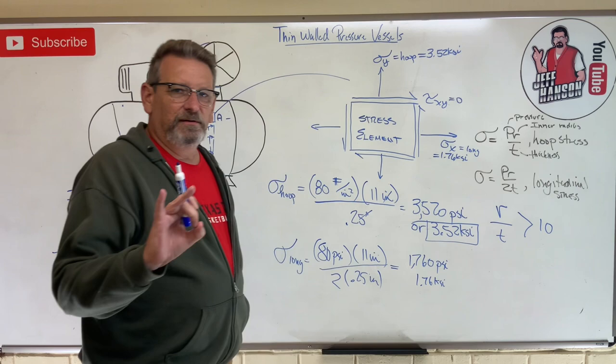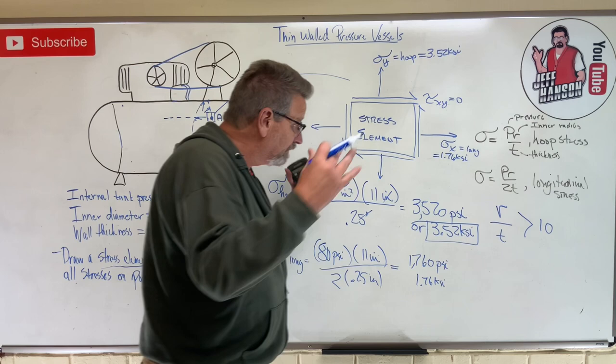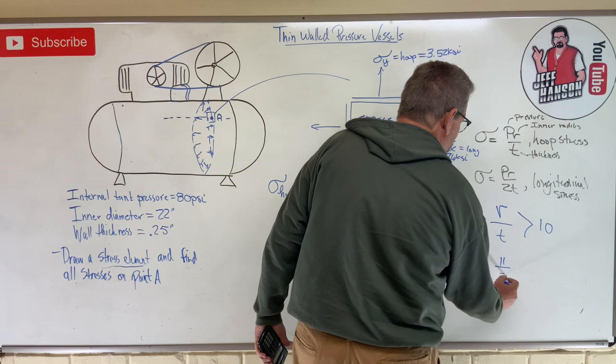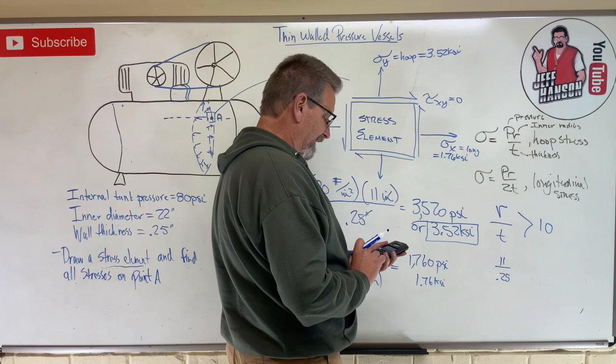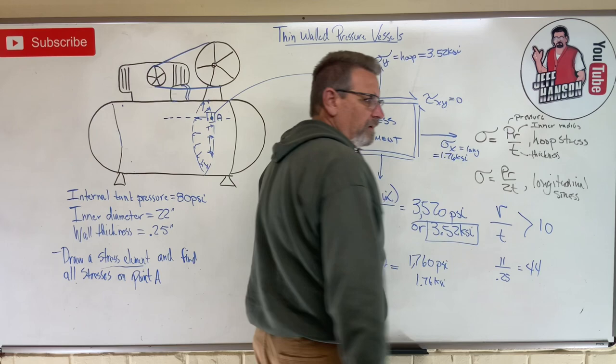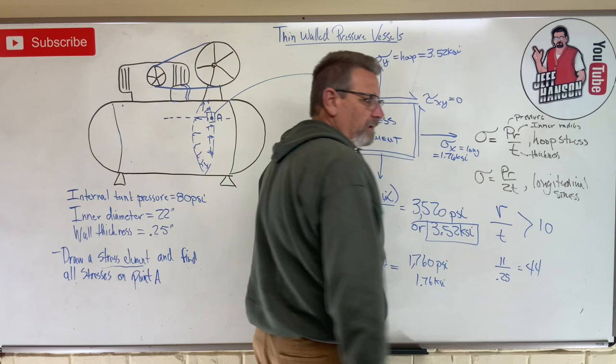For our particular problem, we've got 11 divided by 0.25, which is 44, which is way bigger than 10. So guess what? Yep, you're a thin wall pressure vessel.